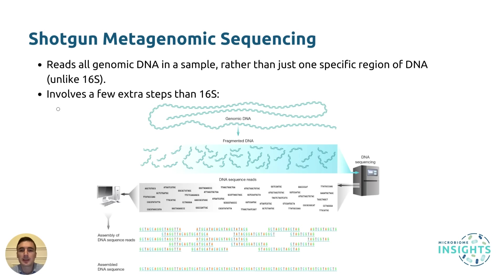Shotgun metagenomic sequencing involves randomly breaking or fragmenting DNA into many small pieces, much like a shotgun would break something up into many pieces. These fragmented pieces of DNA are then sequenced, and their DNA sequences are stitched back together using bioinformatics to identify the species and genes present in the sample. Unlike 16S sequencing, shotgun metagenomic sequencing can read all genomic DNA in a sample rather than just one specific region of DNA. For microbiome studies, this means that shotgun sequencing can identify and profile bacteria, fungi, viruses, and many other types of microorganisms at the same time.